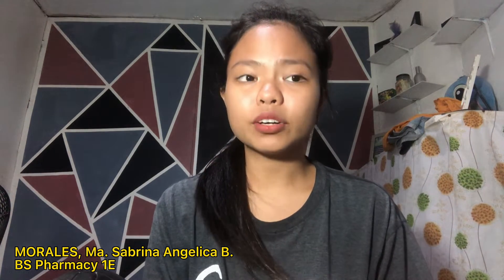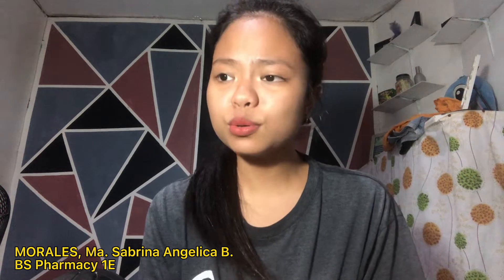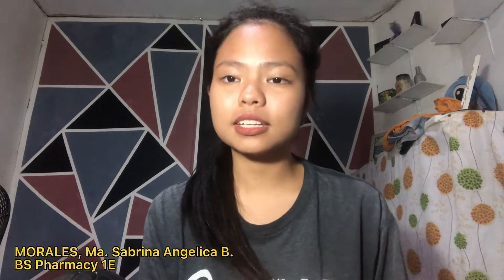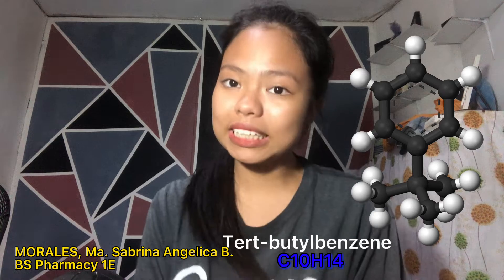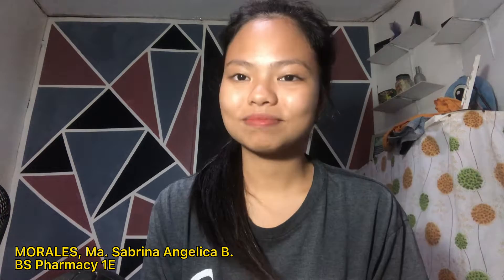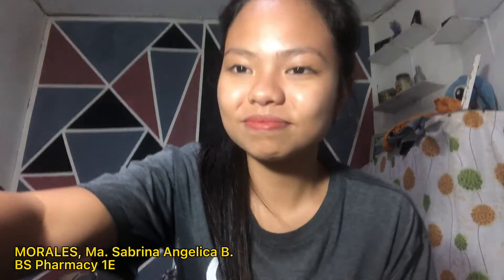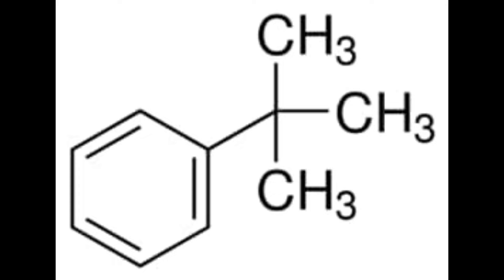The organic compound that I chose in this project is tert-butyl benzene. Tert-butyl benzene is an organic compound classified as an aromatic hydrocarbon. Its structure consists of a benzene ring substituted with a tert-butyl group. It is a colorless liquid that is used primarily as a solvent in the synthetic organic chemistry industry and as a polymer linking agent.